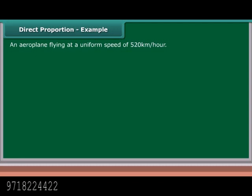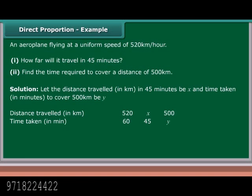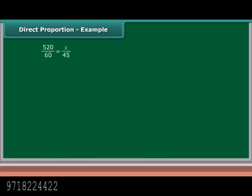An airplane flying at a uniform speed of 520 kilometers per hour — how far will it travel in 45 minutes? Solution: Let the distance traveled in 45 minutes be X kilometers. Since the speed is uniform, the distance covered is directly proportional to time. 520/60 = X/45, so X = (520 × 45)/60 = 390 kilometers.